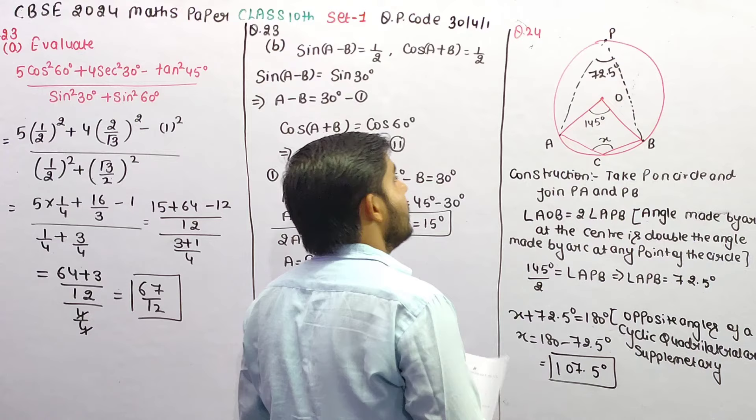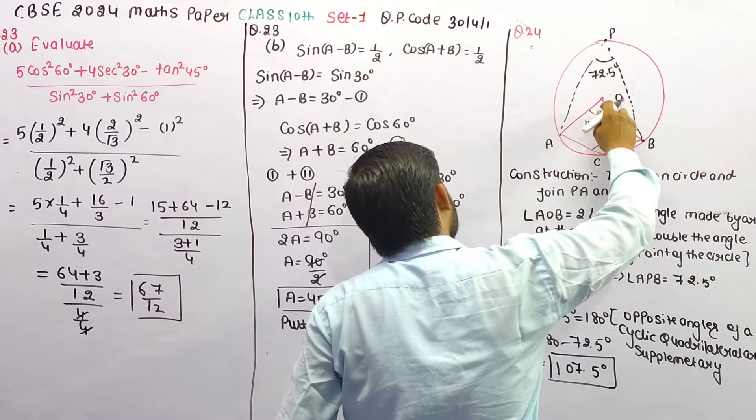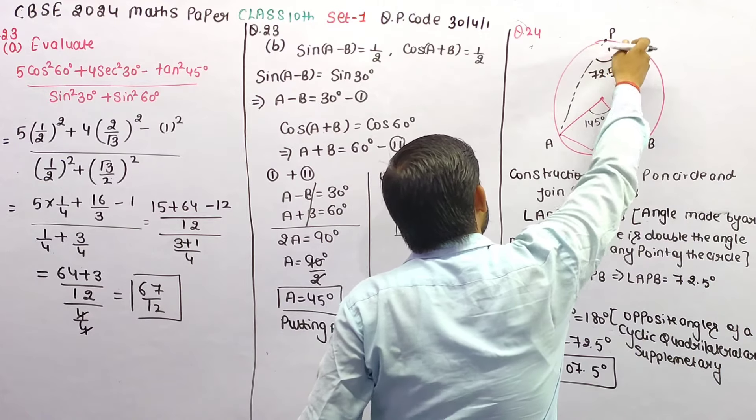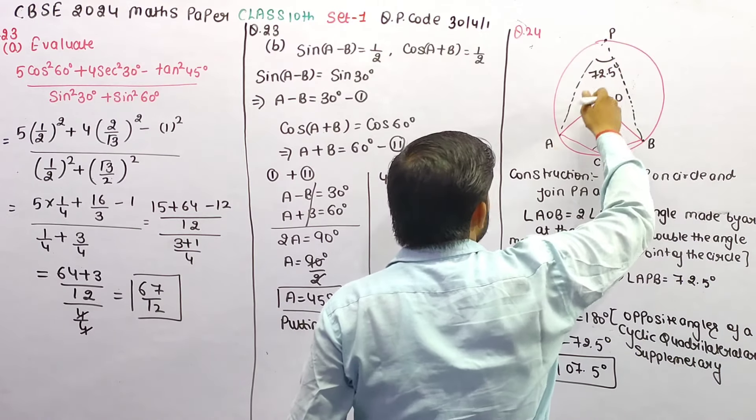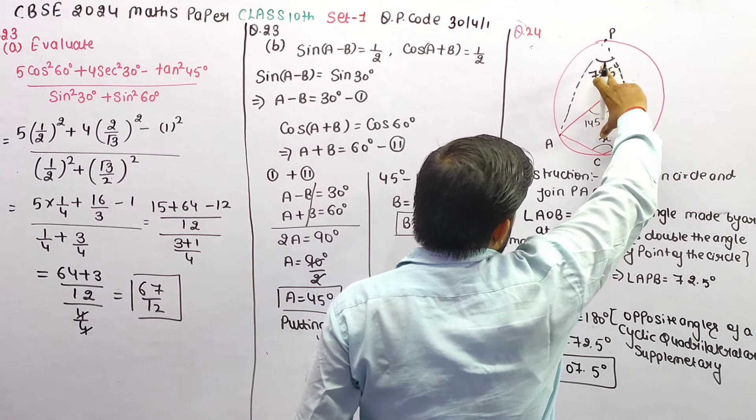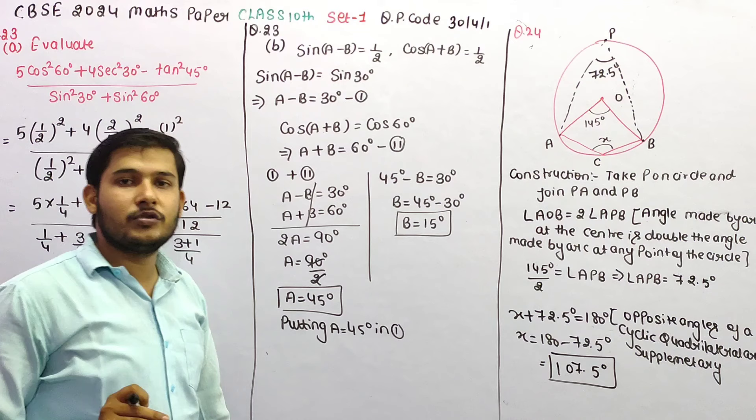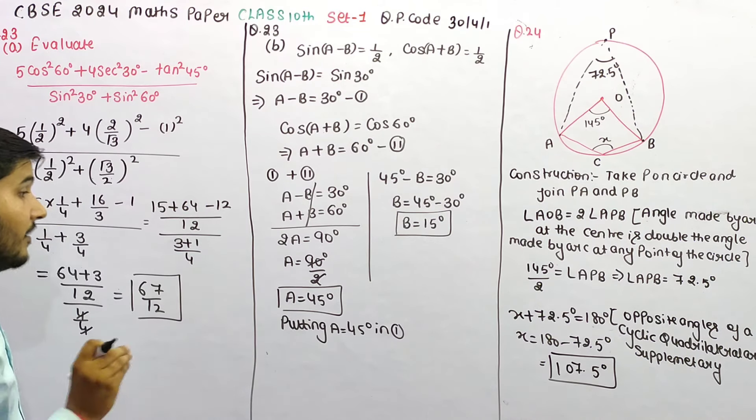Two theorems we used here: angle made by an arc at the center is double the angle made by an arc at any point, and cyclic quadrilateral's opposite angles have sum of 180, that means they are supplementary and we got the value of X.